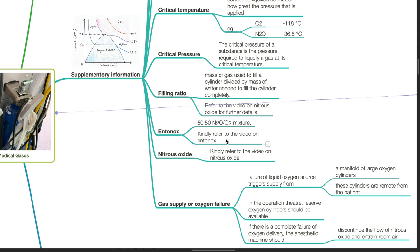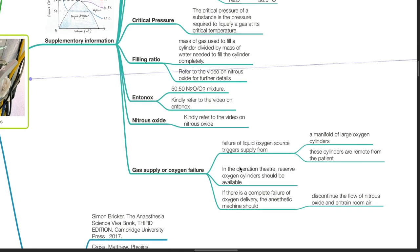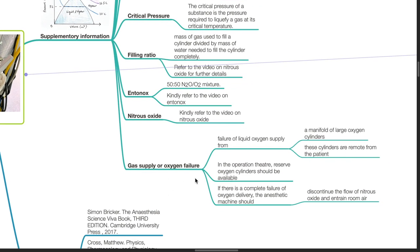Gas supply or oxygen failure can result from failure of liquid oxygen supply from a manifold of large oxygen cylinders remote from the patient. In the operation theatre, reserve oxygen cylinders should be available. If there is a complete failure of oxygen delivery, the anesthetic machine should discontinue the flow of nitrous oxide and entrain room air.